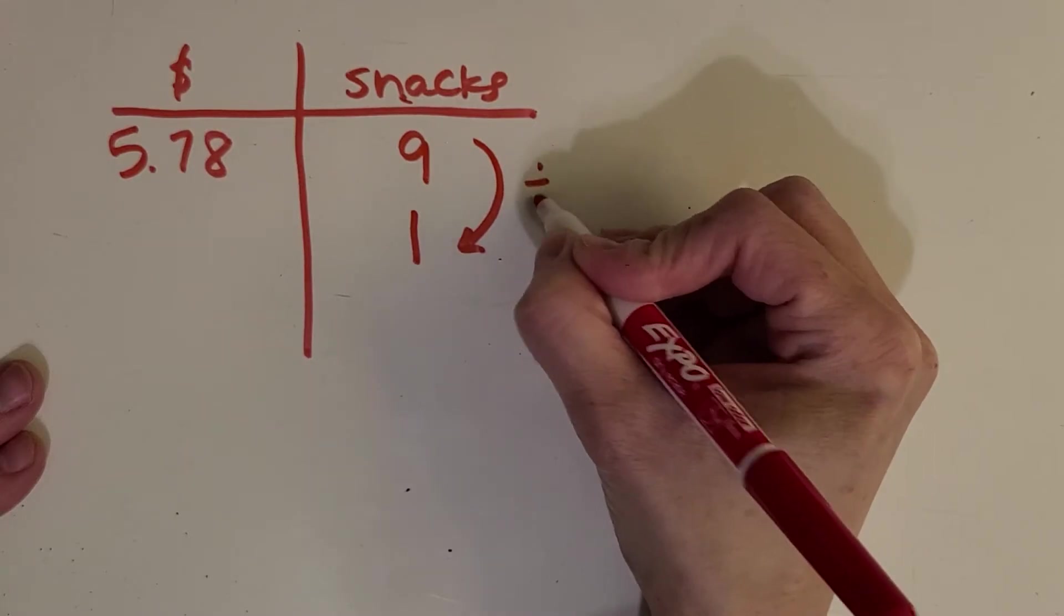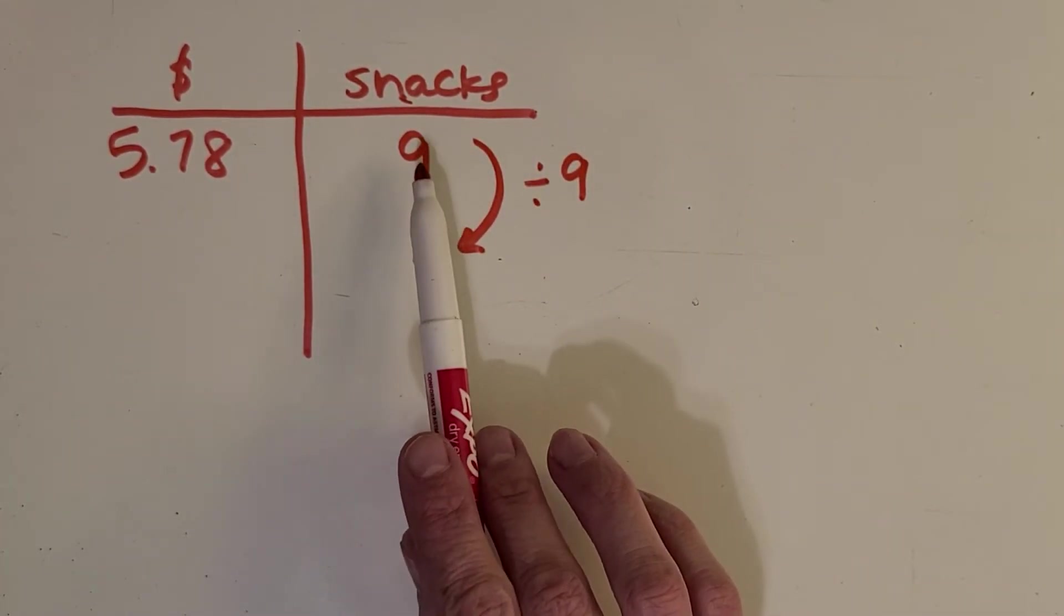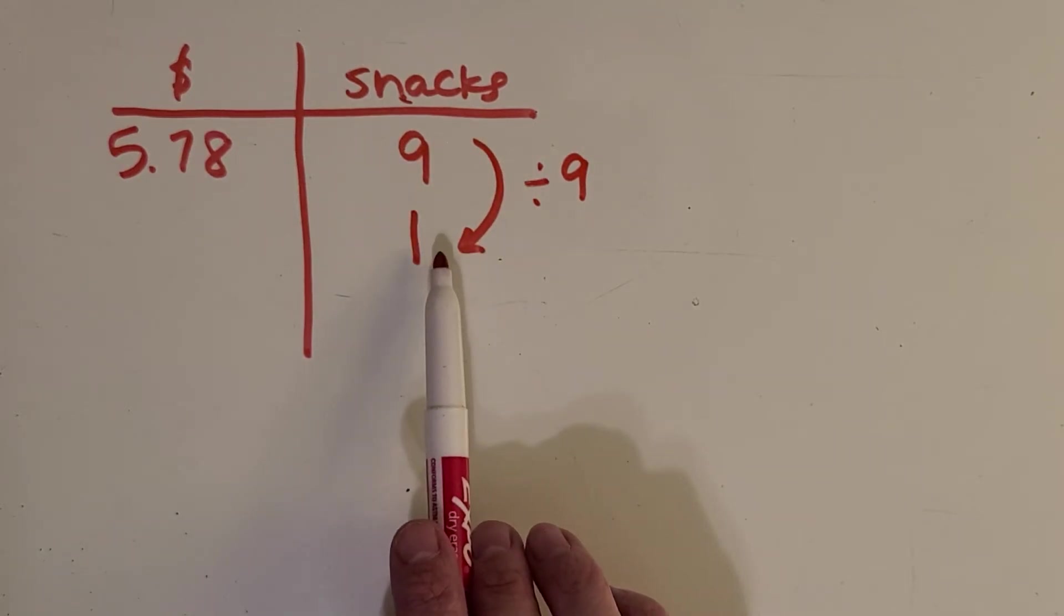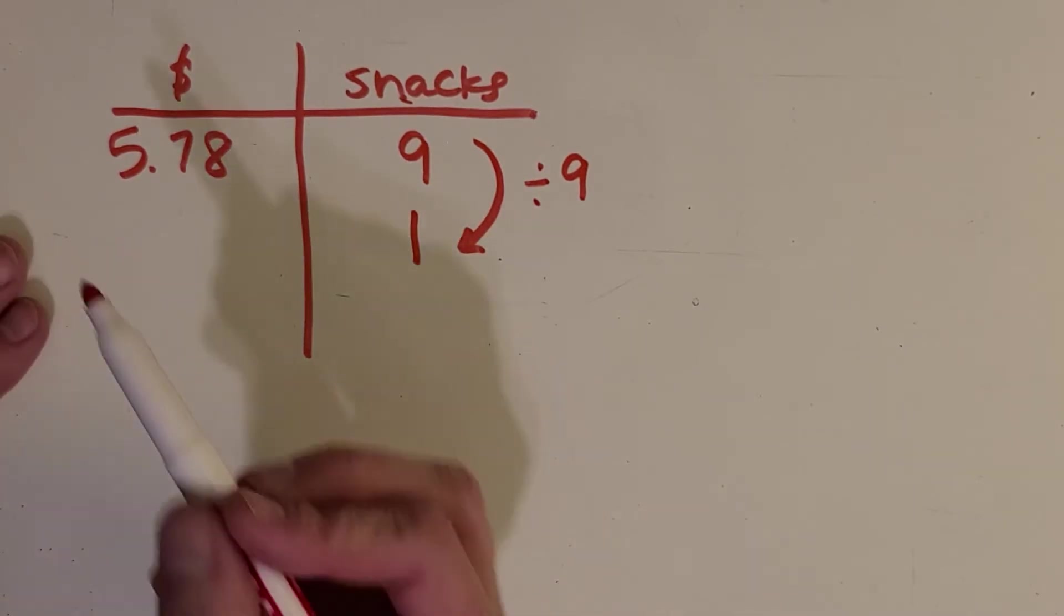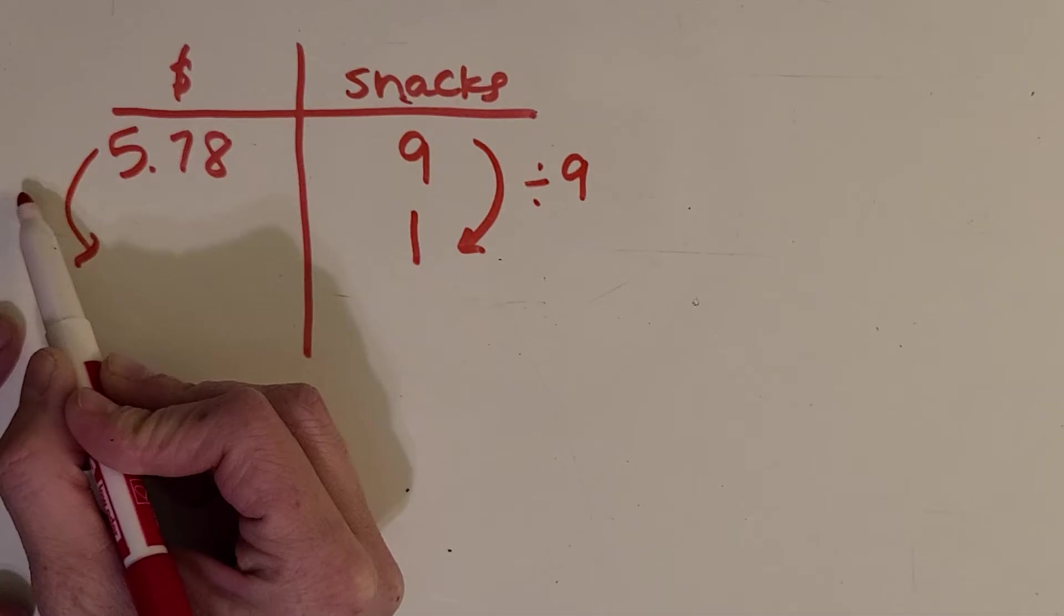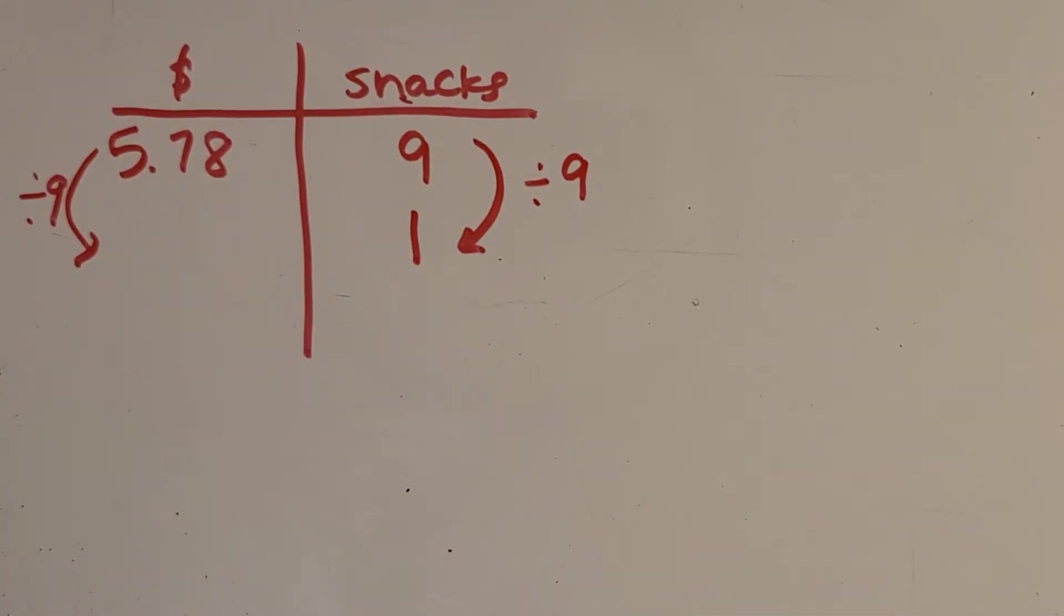From nine down to one. What operation am I doing? Okay you might have said divide by nine. You might have also thought well it could also be minus eight. But when we're doing unit rates we're looking at multiplication and division. So then I would also want to do divided by nine over here. Okay and I want you to pause the video and work that problem out. And then we'll come back and check your work.